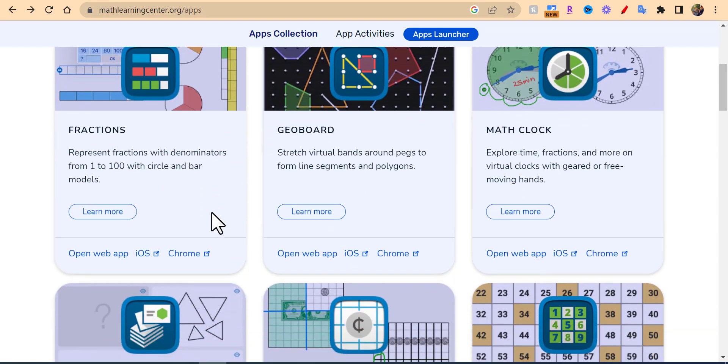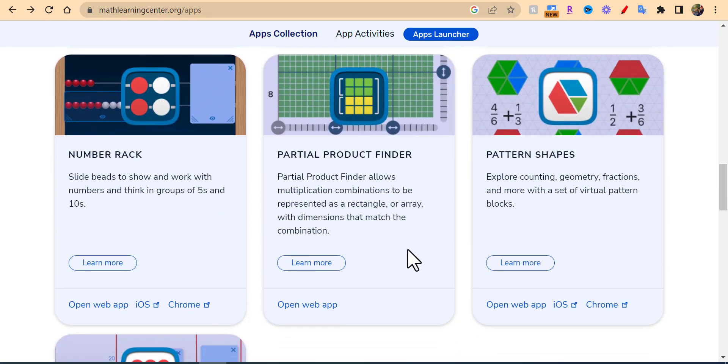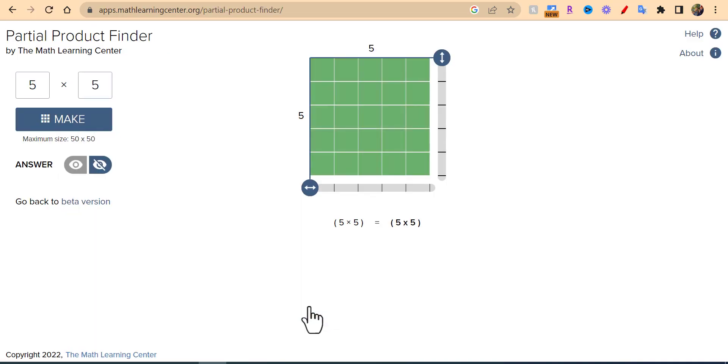Hi everyone, this is Brad. Today we're taking a look at mathlearningcenter.org apps, specifically the Partial Product Finder, which lets you represent multiplication as a rectangle, an array, or dimensions that match your combination. You can see it's set up with a 5 by 5.